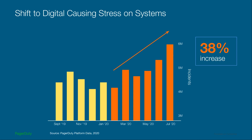Looking across all incidents in PagerDuty across our platform, we've seen that incidents have increased about 38% in the six months following the start of the pandemic versus the six months before. That's a pretty significant increase, largely because the pandemic has forced an abrupt shift to largely digital-only services and working from home.